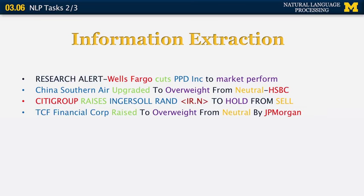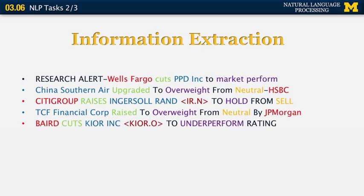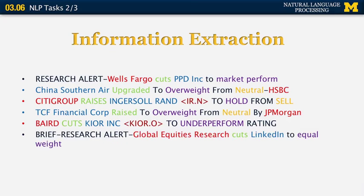You can see that this concept can be expressed in many different ways — the colors move all over the place. You can also have uppercase and lowercase variations. You can have missing fields. For example, in the example about Baird cutting KIOR incorporated to underperform rating, we know the new rating but not the old rating. The goal of an information extraction system is to read sentences like these, understand the different named entities and ratings, and represent this information in a table.